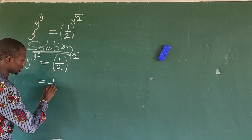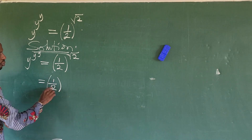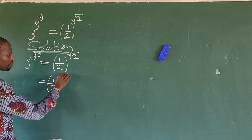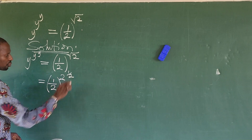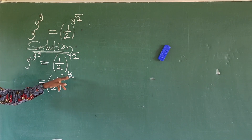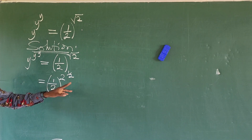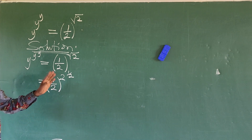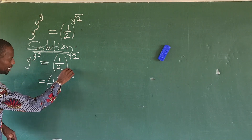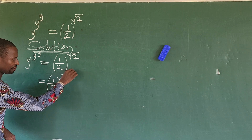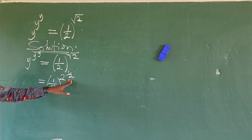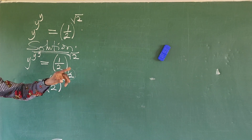So this gives us 1 over 2, all raised to power 2, all raised to 1 over 2 — because the square root sign is the same thing as raising to the power 1 over 2. Now, this exponent: I want to multiply it by 2 over 2.